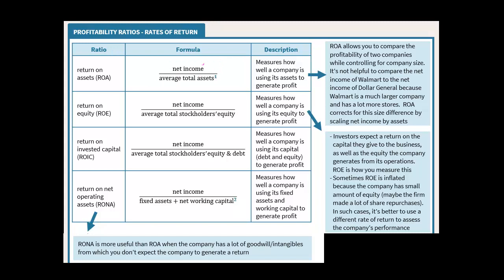ROA scales the company's profit by its size in terms of assets. That's helpful when comparing two companies of very different sizes — like Walmart and Dollar General. A larger company would naturally have more net income simply due to its size. What you really want to know is: what is your profit given the amount of assets at your disposal? That's what return on assets tells us, and it's a really helpful measure.